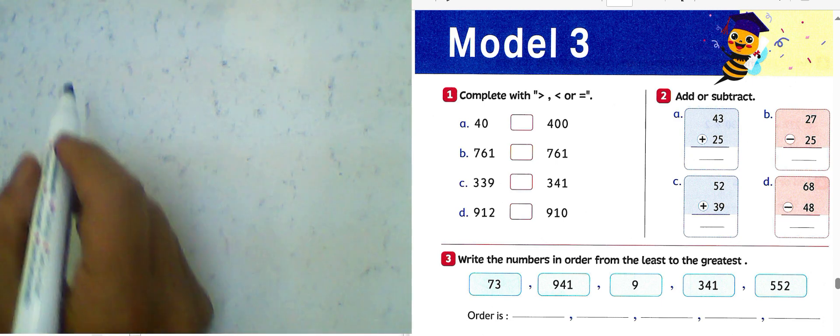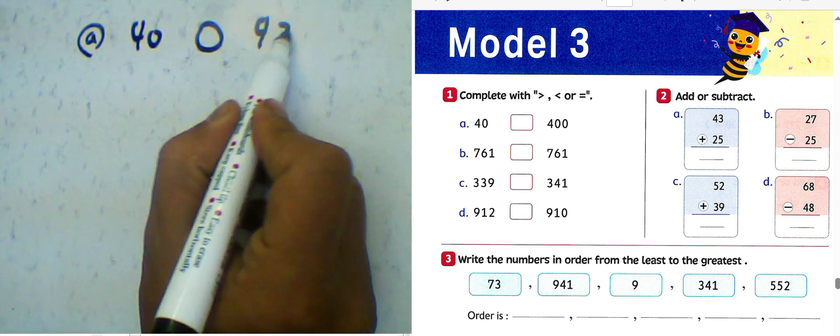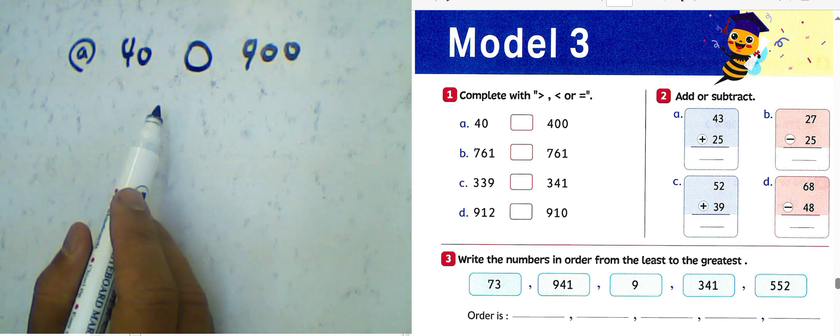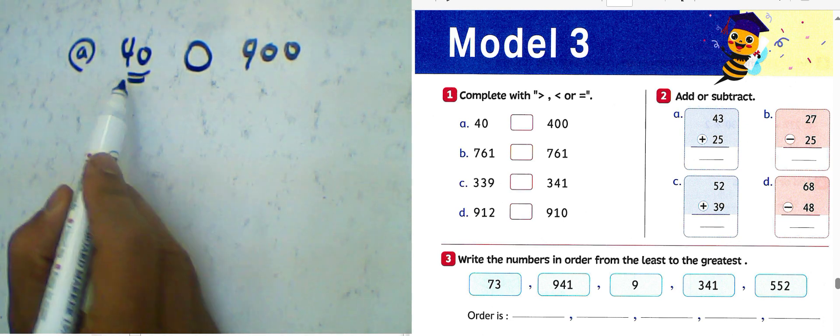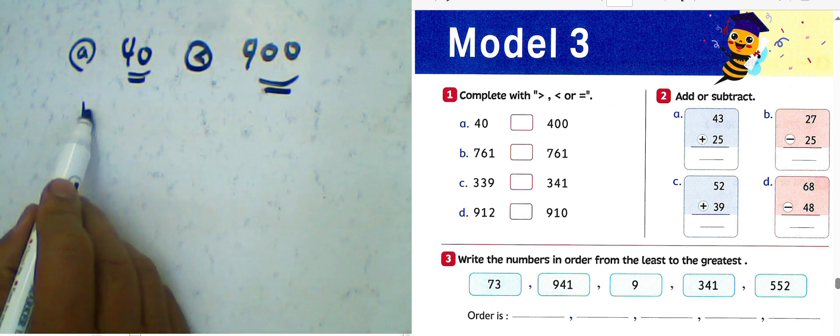Compare between two numbers. Letter A: we have 40 and 400. 40, this is 400. We have two digits and three digits, we must choose less than. Letter B: 751 and 751 is equivalent.